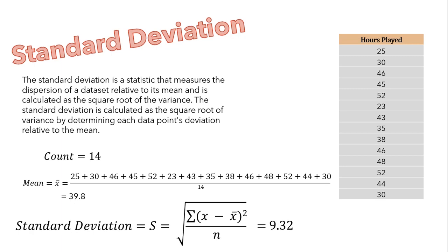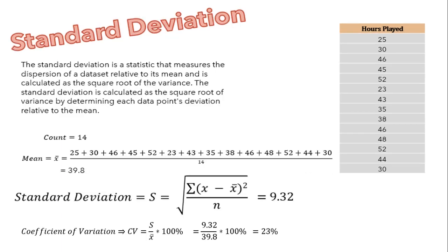We will also calculate the coefficient of variation, which equals standard deviation over mean of observations multiplied by 100%. One important thing to note: we use standard deviation for building tree branches, while coefficient of variation determines when we should stop branching the tree.